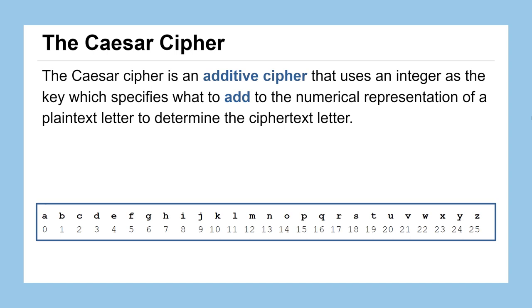Now that we've established our numerical system for representing letters, we could learn how to actually implement an algorithm to encrypt a message. The Caesar cipher, named after Caesar, the famous historical figure, is an additive cipher, and it uses a key which is an integer. That key will specify what number to add to the numerical representation of your plaintext letter, and that'll help us determine the numerical representation of our ciphertext letter.